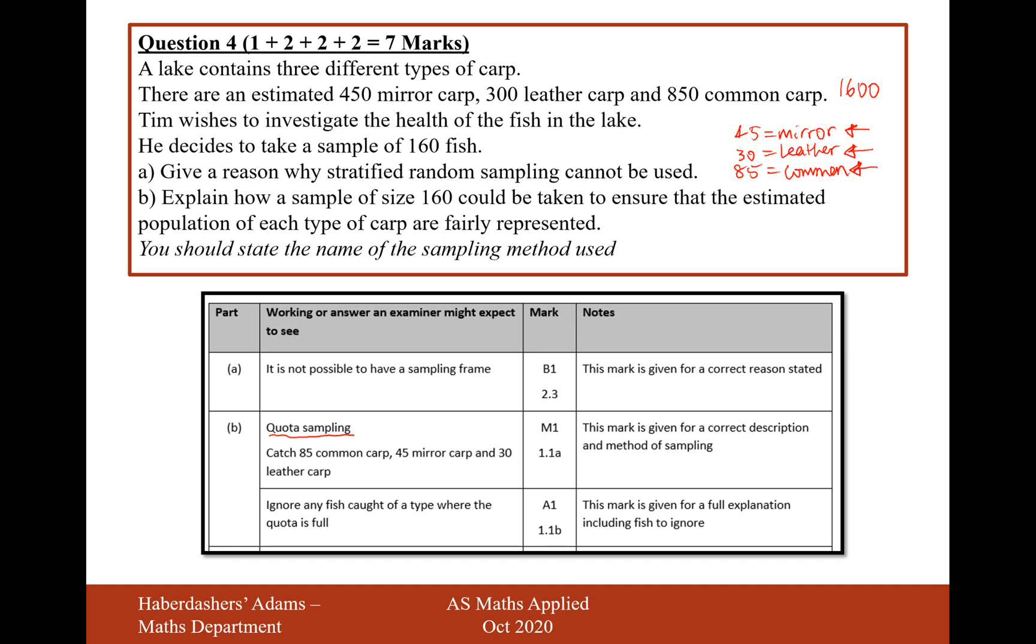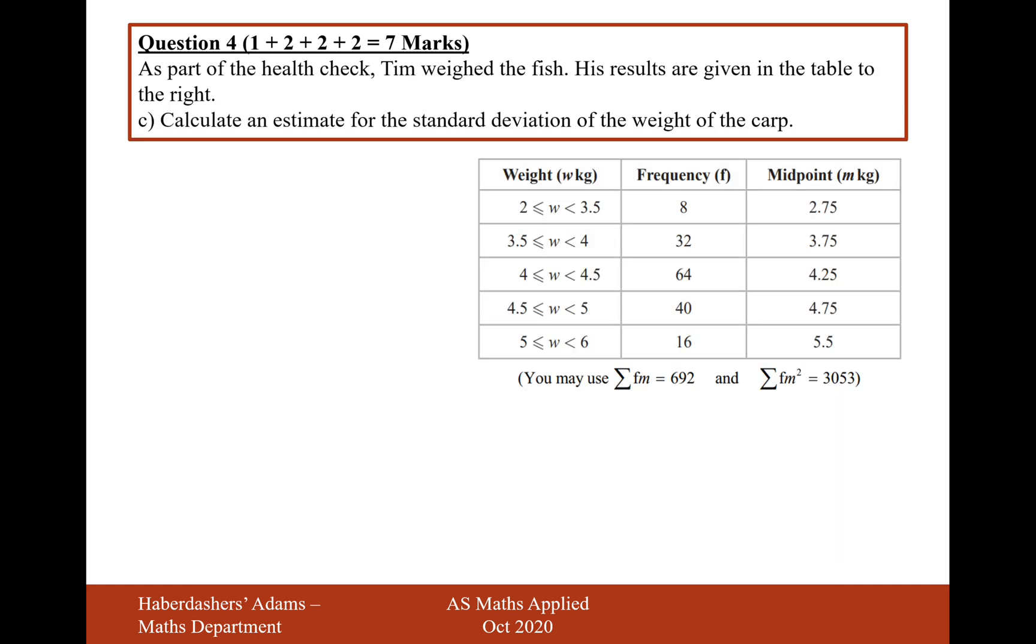So that's the answer to part A and B. Let's move on to question C. As part of the health check, Tim weighs the fish. His results are given in the table to the right. Calculate an estimate for the standard deviation of the weight of the carp. So we all know that the standard deviation formula is going to be the sum of fx squared over n minus the sum of fx over n all squared. That's the mean squared. So how many fish do we have in total here? So I think that's 160, but let's just check. 8 plus 32 plus 64 plus 40 plus 16. Yep, that's 160. So n equals 160.